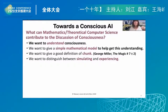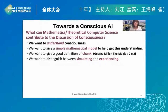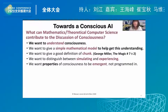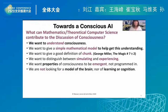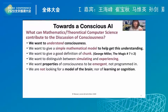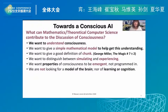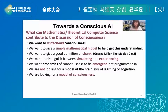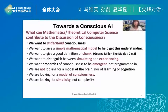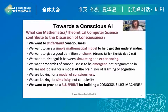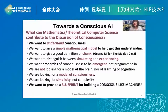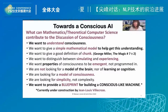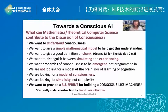We also want to distinguish between simulating and experiencing. We want properties of consciousness to be emergent, not programmed in. We are not looking for a model of the brain, nor of learning or cognition — we are looking for a model of consciousness. We are looking for simplicity, not complexity. And we'd like to form a blueprint for building a conscious-like machine. Our colleague is working with us on this.